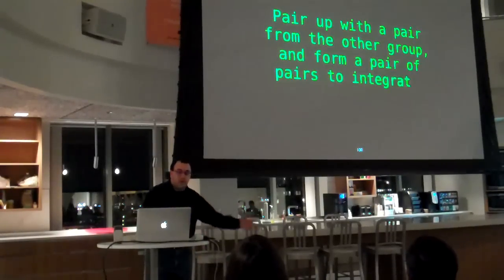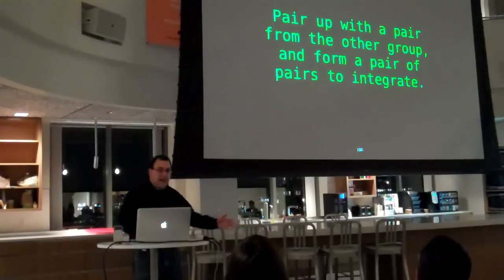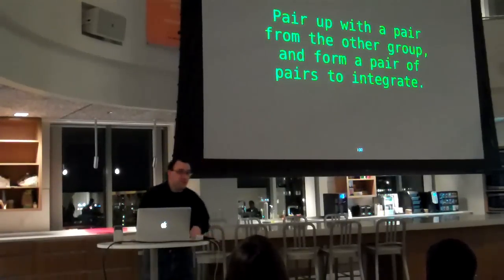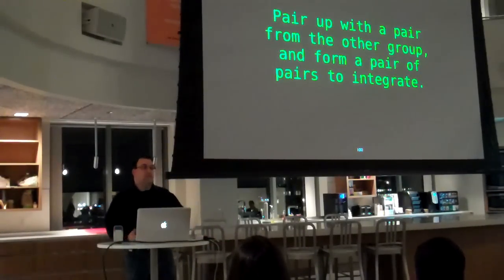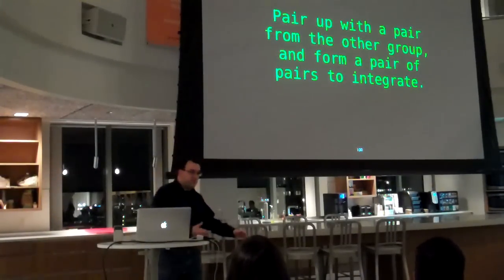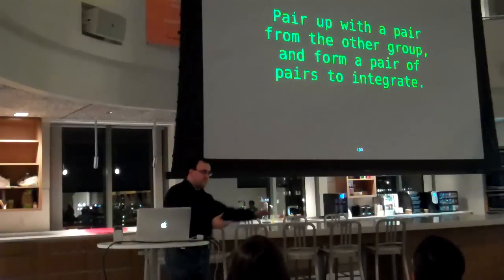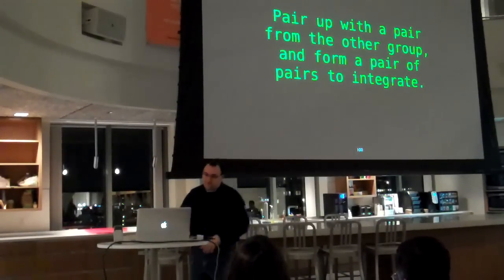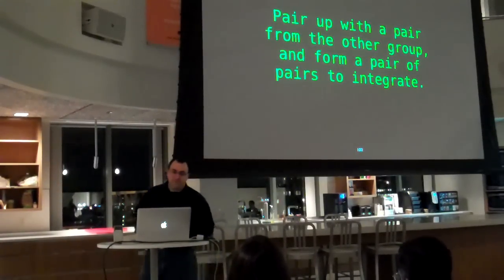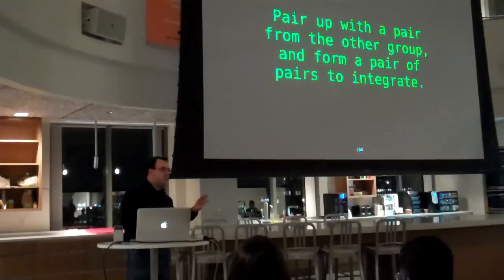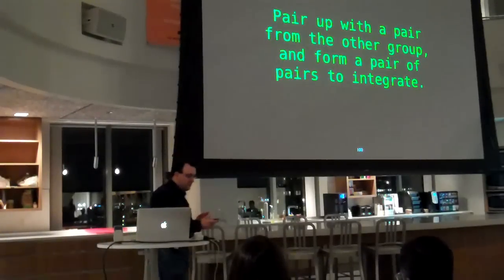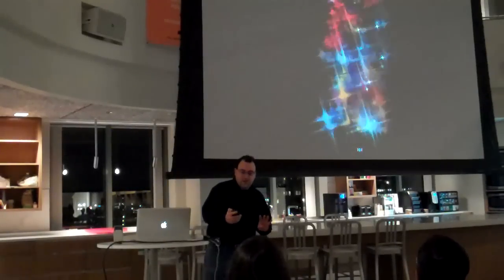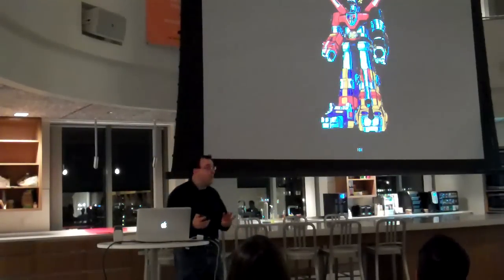After that, the groups are going to get together. You want to form a pair of pairs — two people, one pair from Group A and one pair from Group 1 — so you can integrate your code together. That's going to be four people on each team at that point.